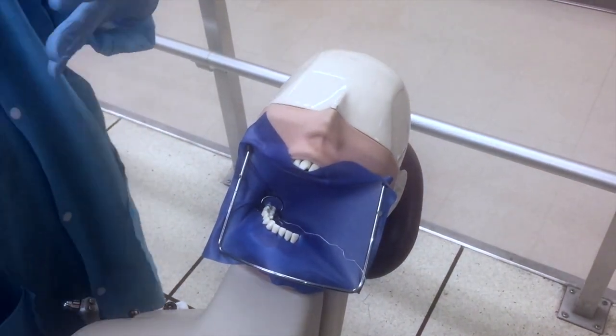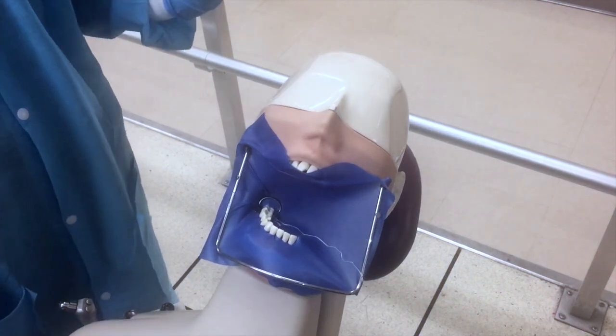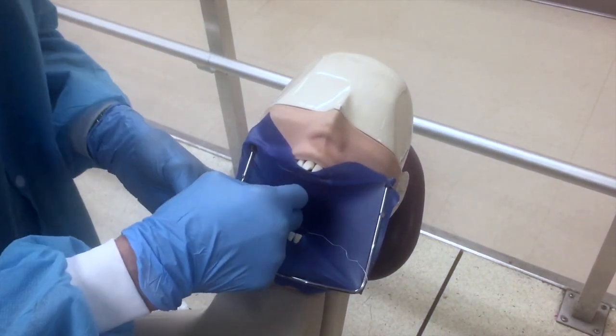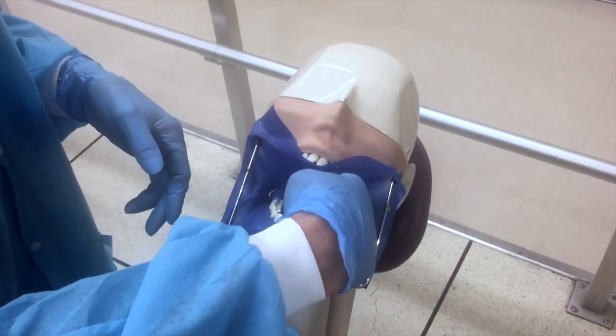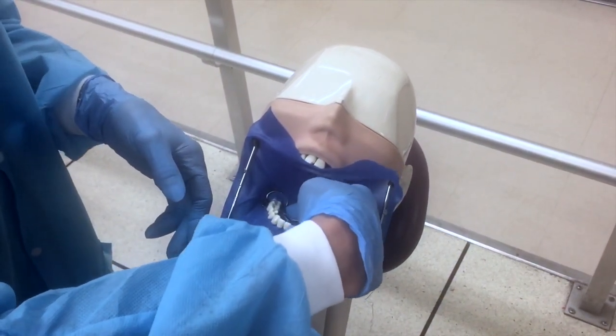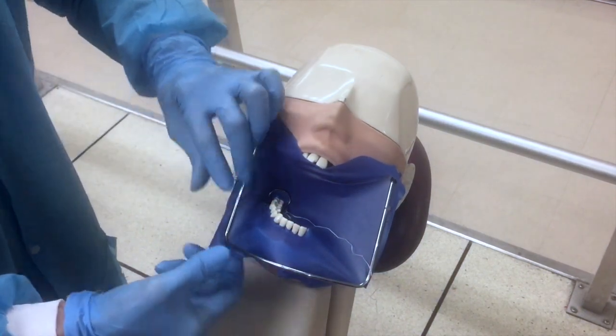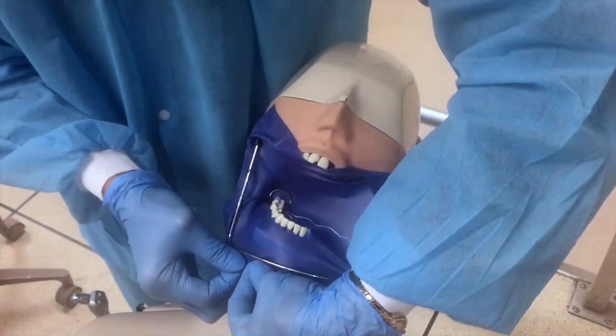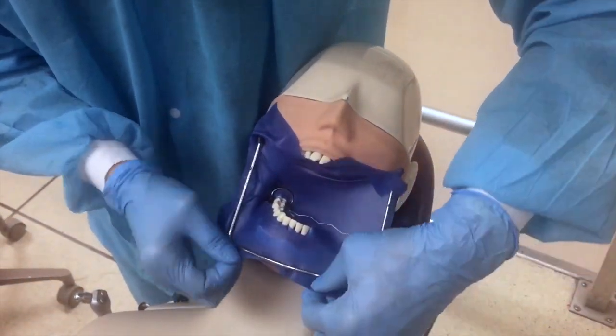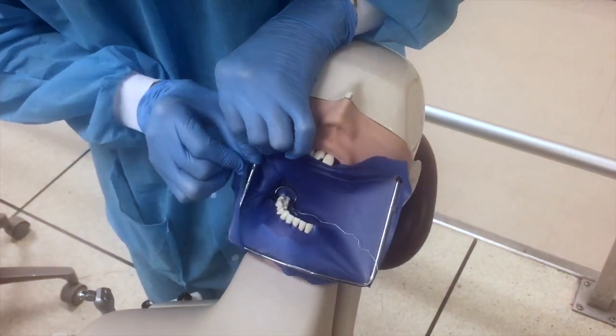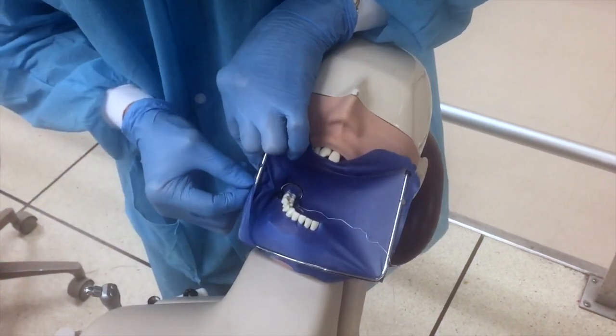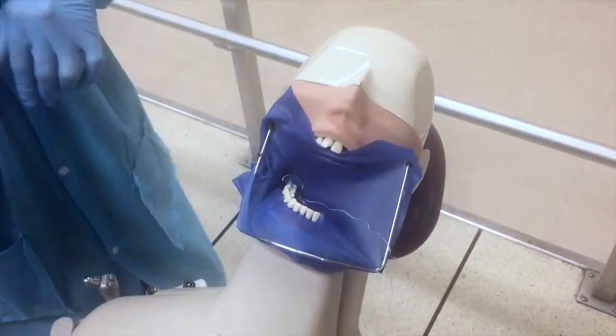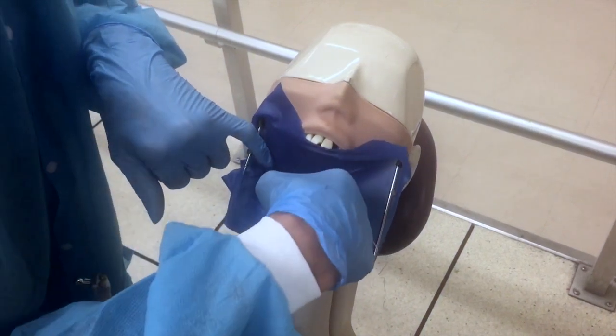Don't worry about that. You can take the saliva ejector and hold it right in there. Sometimes you can make like a little cup here. Water will collect there so it's not dripping all over the place.